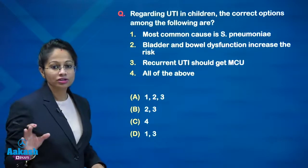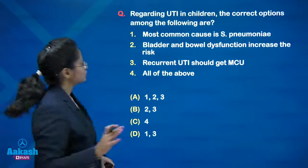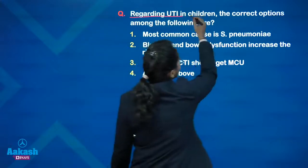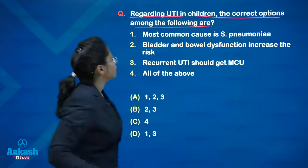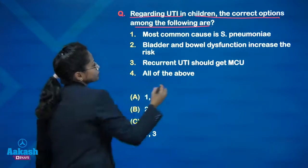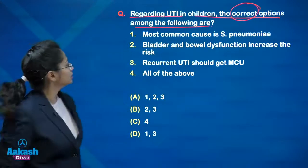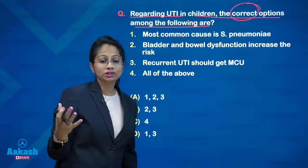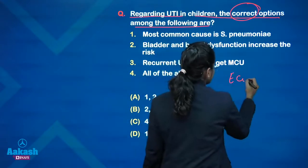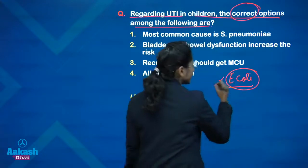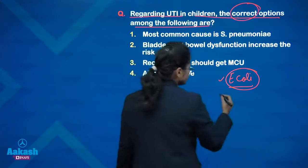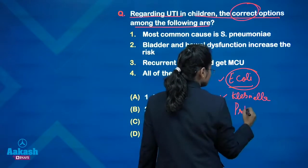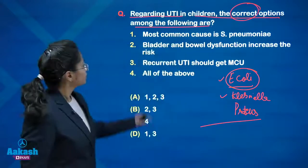Next: urinary tract infection. Two questions were asked in this NICT exam about UTI. Regarding UTI in children, the correct options are: number one — most common cause is streptococcal pneumonia — wrong. The most common cause of UTI in children is E. coli, more than 95% of cases. Others are Klebsiella and Proteus. Not streptococcus pneumoniae, so this option is wrong.